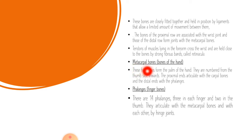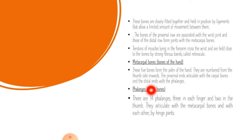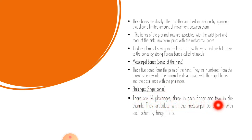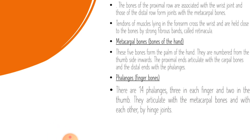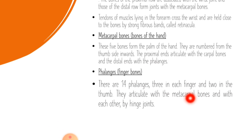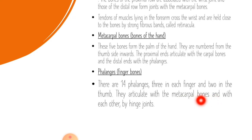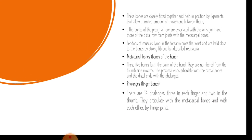Then we have the metacarpal bones. These five bones form the palm of the hand and are numbered from the thumb side. The proximal ends articulate with the carpal bones and the distal ends with the phalanges. There are 14 phalanges in total: three in each finger and two in the thumb. They articulate with the metacarpal bones at the proximal end and with each other by hinge joints.